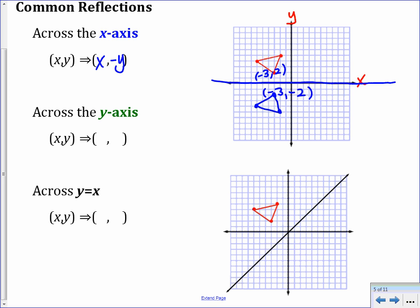A similar rule applies when reflecting across the y-axis, which is the vertical axis. The y-coordinate does not change — only the x-coordinate changes sign. So (-3, 2) becomes (3, 2), and point (x, y) goes to (-x, y). You can also verify this by counting each point's distance to the y-axis and placing the reflected point the same distance on the other side.